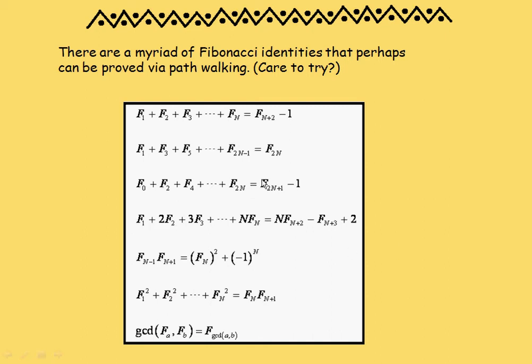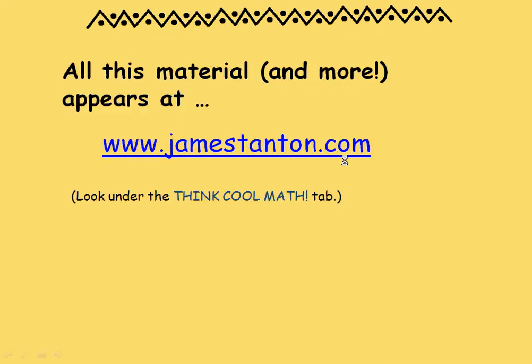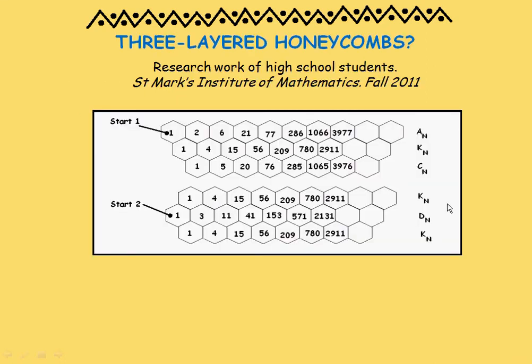So there's some other Fibonacci identities I've just pulled out of the air. Can these be proved via path walking? Go for it, is what I say. Let me know if you want. Email me if you come up with something clever and interesting. Let me go a little bit further. By the way, you can probably guess that you've come to this website. All this material does appear on this website. But there's a natural question for further research.